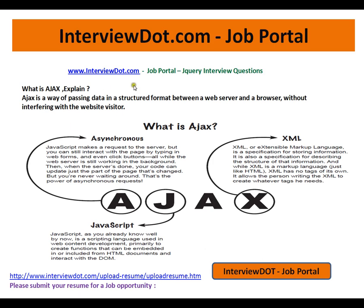AJAX means Asynchronous JavaScript and XML. Asynchronous means JavaScript makes a request to the server, but you can still interact with the page — typing in web forms and even clicking buttons. JavaScript is a scripting language where whenever you hover, click, or press a keyboard button, it listens to that event and performs some function. And XML is the data structure — the structured format — that is sent between the server and the browser.